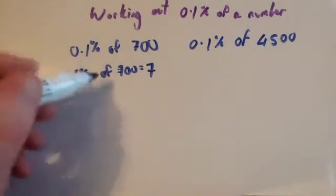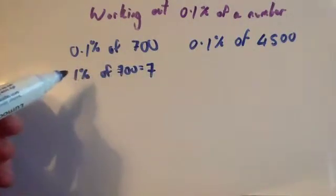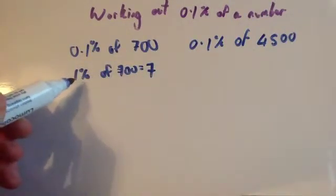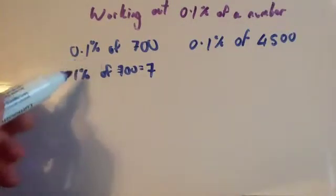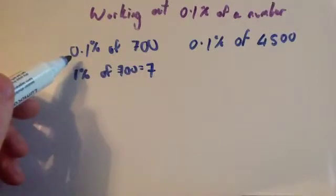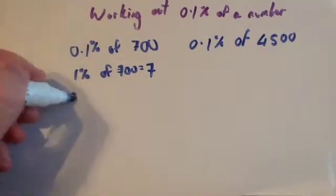And then, once you get what 1% is, then you divide that by 10. Because remember, if you get 1%, if you divide by 10, it would be 0.1%. Or 1 divided by 10 is 0.1. So 1% divided by 10 is 0.1%.